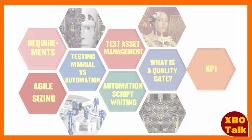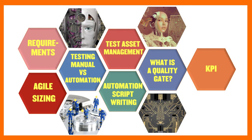By the end of this 7-part series, you'll understand requirements and how they can impact software quality, Agile sizing and estimating and how they also impact software quality, testing from a manual point of view or using automation and what makes sense in automating, and test asset management.